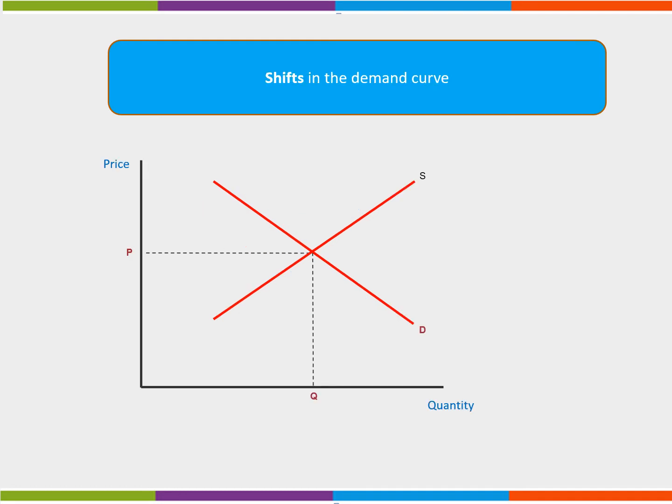Shifts in the demand curve can be shown graphically. An increase in demand will see the demand curve shift upwards and towards the right from D to D1. This will cause price to rise to P1 and quantity demanded to Q1. At this point, we have a new market equilibrium, P1-Q1.